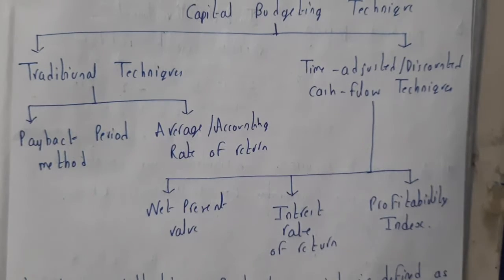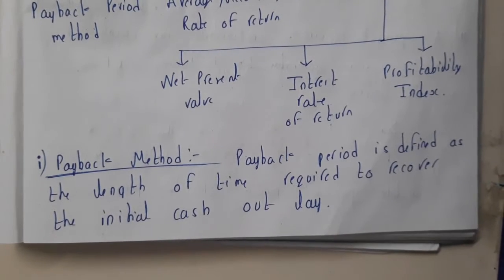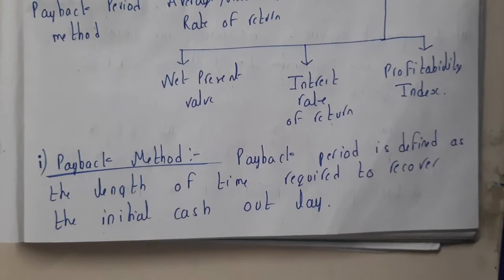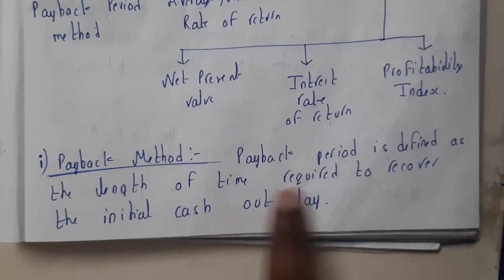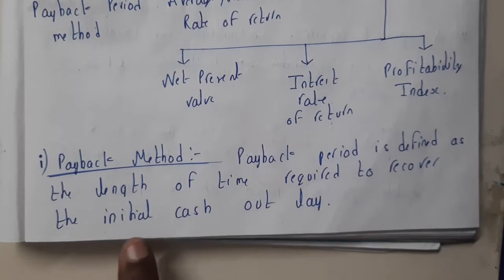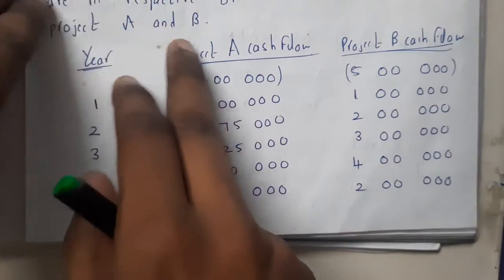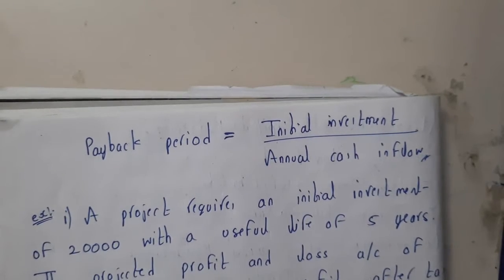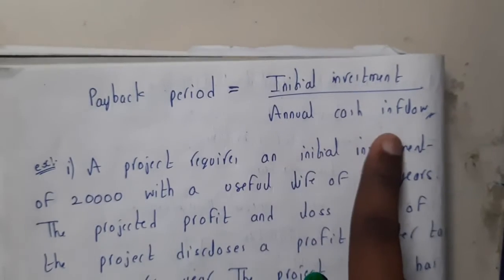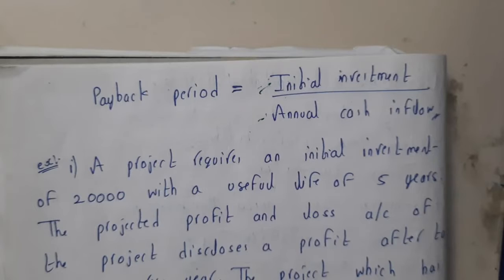Payback period is a traditional capital budgeting technique. From the name itself you can understand — if you invested some money, how much time will it take for you to get the money back. Payback period is defined as the length of time required to recover the initial cash outlay. The formula is: Payback Period = Initial Investment / Annual Cash Inflow.